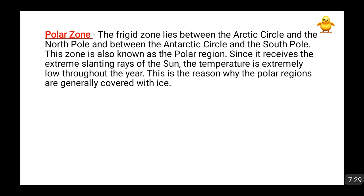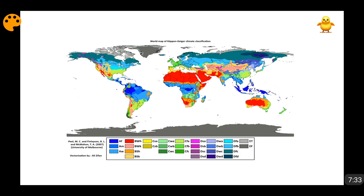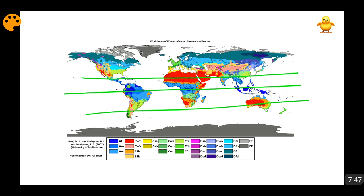Now looking at the world map — if we draw an approximate equator and then plot the tropic of cancer and tropic of Capricorn, you will see these areas become torrid or tropical areas. According to the logic, they should receive a lot of sunlight, and they do. That is why North African countries, the Arabian Peninsula, and the initial part of Pakistan become very hot. Similarly, this Australian part also becomes a bit hot. However, it is not true for all countries coming in the torrid zone, because a lot depends on local climatological factors.